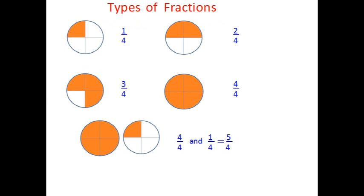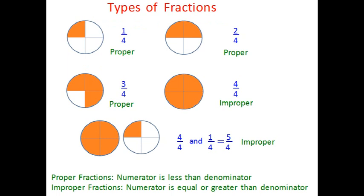In the first three examples, the fraction represents something less than the whole, so these are called proper fractions. Whereas 4 over 4 and 5 over 4 are equal to or greater than the whole — greater than 1 — so these are called improper fractions. Proper fractions are those where the numerator is less than the denominator, and improper fractions are those where the numerator is either equal to or greater than the denominator.